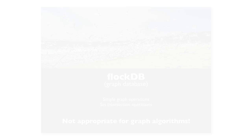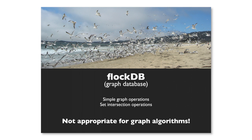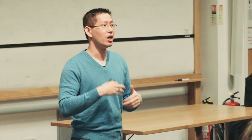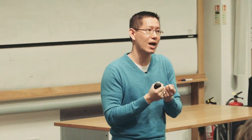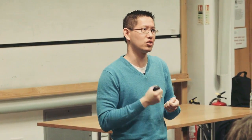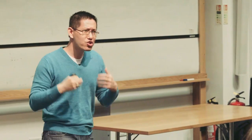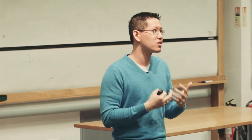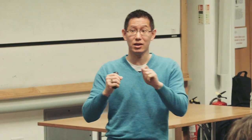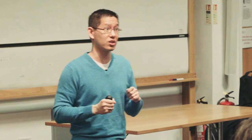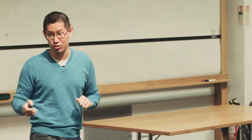It all starts with FlockDB, the database that stores the graph — the system of record. It's essentially a thin layer on top of MySQL, offering simple graph operations: create, remove, delete, update — your CRUD operations — and also simple set intersection, which you need to deliver at-replies. It should be fairly obvious this is not the system you want to use for graph analytics. This is the system users are hitting when they follow or unfollow somebody, so you want to separate the analytics from that data source.